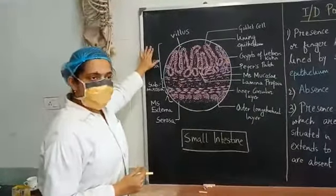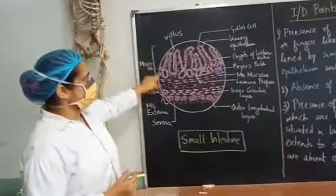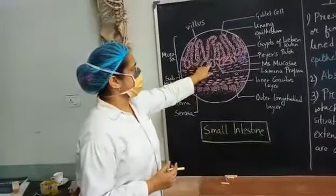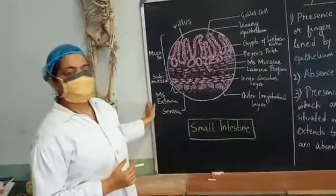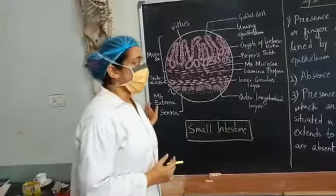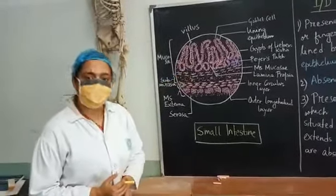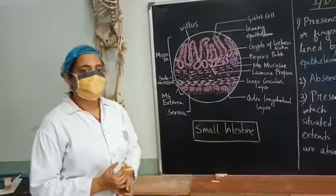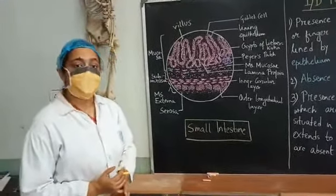As this is a part of the gut tube, this is mucosa. You will find the crypts of Lieberkühn intestinal glands here, just like in duodenum. But the specialized point is here you will not find any Brunner's gland. This is very important. In the small intestine, Brunner's gland is absent.